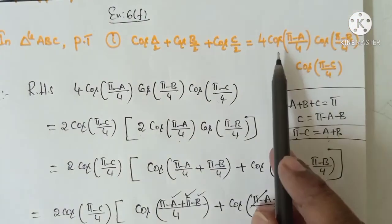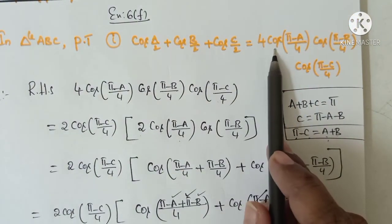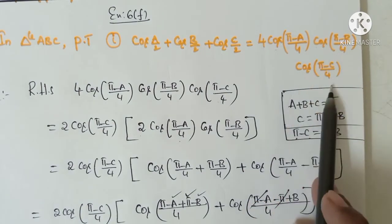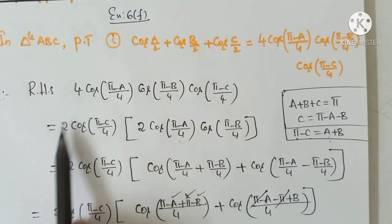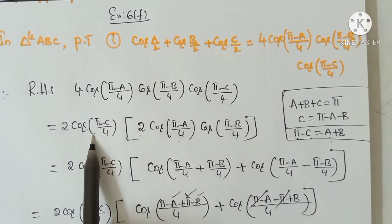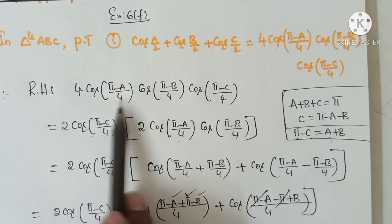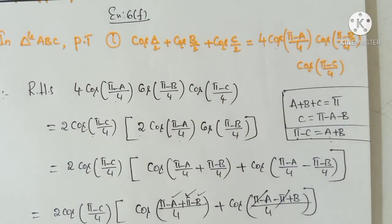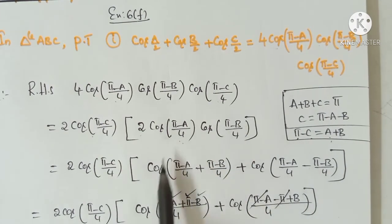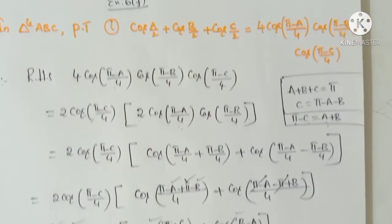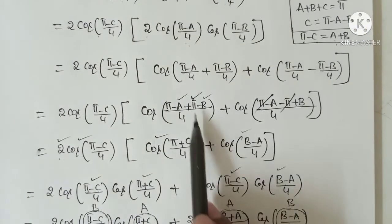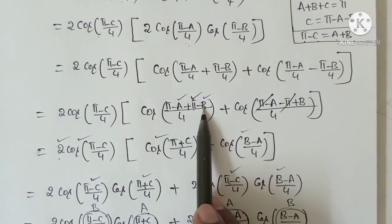So this is the procedure to solve these types of problems. First we took RHS: 4 cos((π−A)/4) · cos((π−B)/4) · cos((π−C)/4). We split 4 as 2 into 2, applied cos A · cos B → cos(A+B) + cos(A−B) formula, used the condition π − A − B = C, and applied the 180° / π condition to reach LHS.